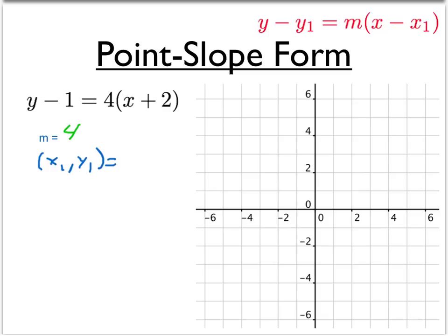And what that means is rise over run. You can think about this as 4 over 1. In other words, we're going to rise 4 units for every 1 unit we move to the right.